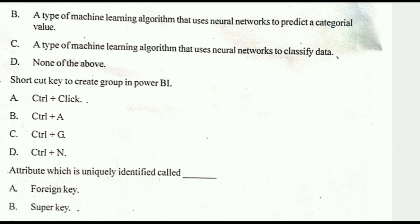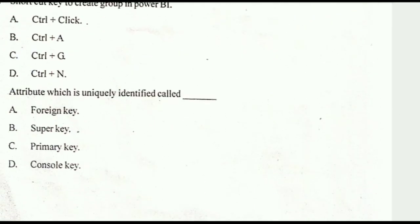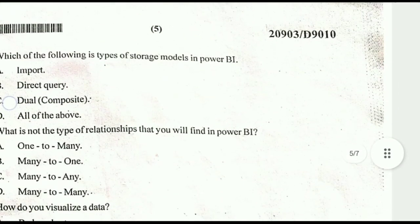Sixteenth question: what is the shortcut key to create a group in Power BI? Everyone may write Control + Click, but that is not correct — Control + G is the correct answer. Seventeenth question: an attribute which uniquely identifies a record is called — the correct answer is primary key.